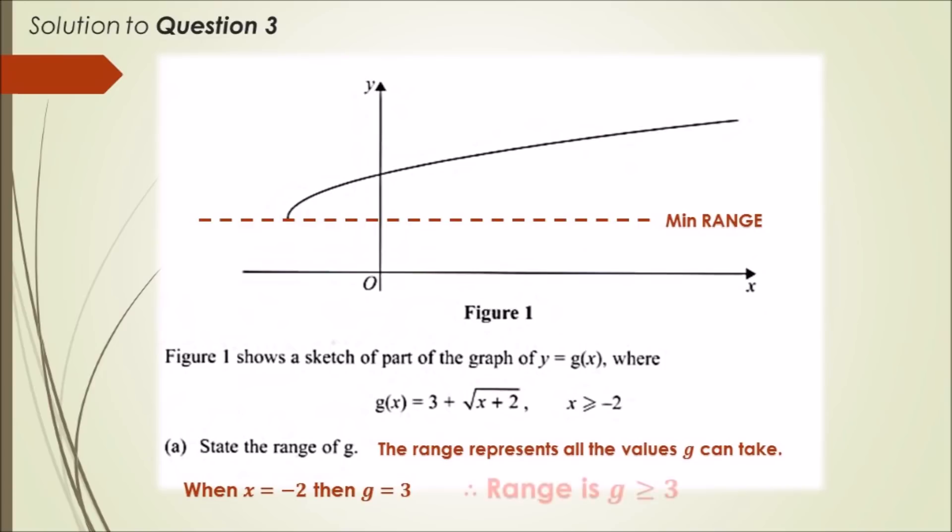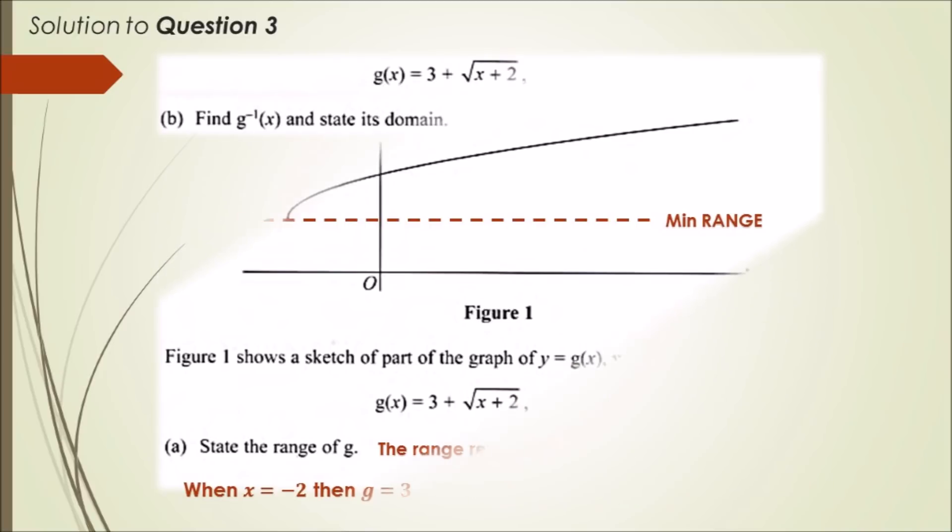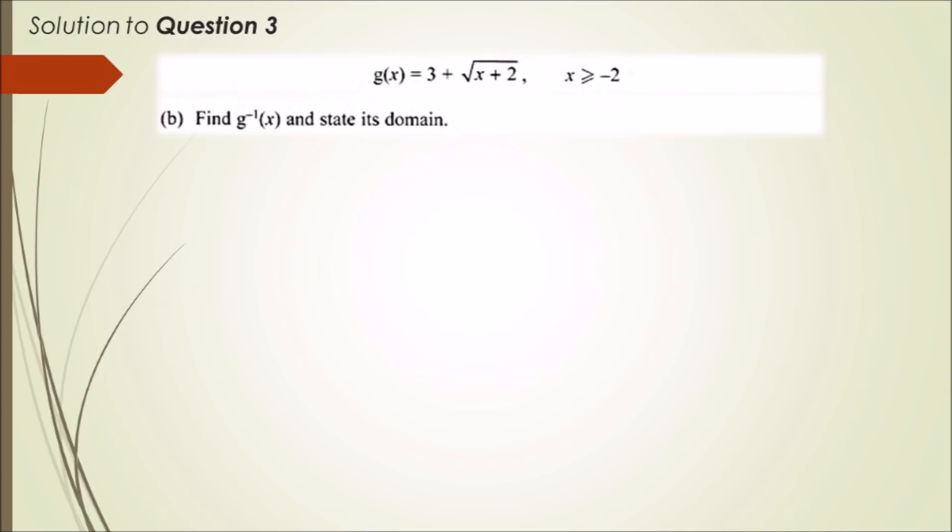Part (b): find the inverse function of g and state its domain. We should let y equal the inverse of g and then rewrite the function in the following way. Basically, all you really want to do is flip g(x) with the letter x and flip x with the letter y, so the function looks a bit like this.